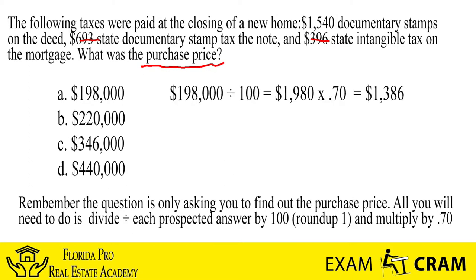Let's take a look at the first one. We take $198,000, divide it by 100, which gives us $1,980. We want to multiply that by 0.70 — remember, doc stamps we use 0.70 — and if we do that, we end up with $1,386. Well, we know that's not $1,540, so we know that is going to be an incorrect answer. The purchase price is not going to be $198,000.